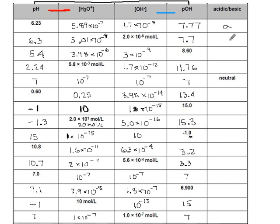6.23, acidic. 6.3, acidic. 5.4, acidic. 2.24, acidic. 0.6, acidic. Minus 1, acidic. Minus 1.3. Very acidic indeed. 15, basic. 10.8, basic. 10.7 is above 7, so it's basic. 7 is neutral. 7.1 is just a smidge above neutral, so technically basic. Minus 1 is acidic, and 7 is neutral. Ha!